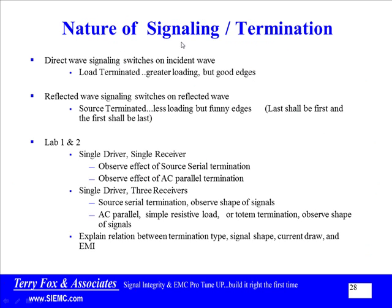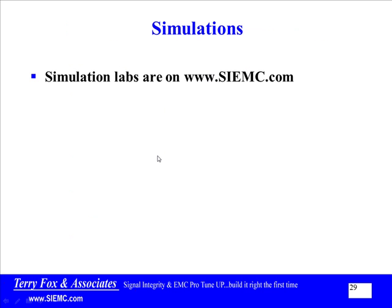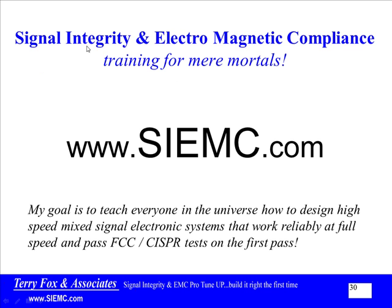The nature of signaling and termination is either direct wave, reflected wave, or some combination of the two. The simulation labs are on SIEMC.com. Signal integrity, electromagnetic compliance — training for mere mortals. My goal is to teach everyone in the universe how to design high-speed mixed-signal electronic systems that work reliably at full speed and pass FCC and CISPR tests on the first try.